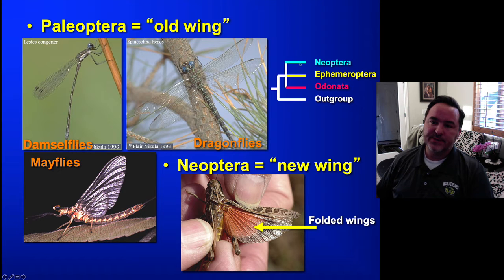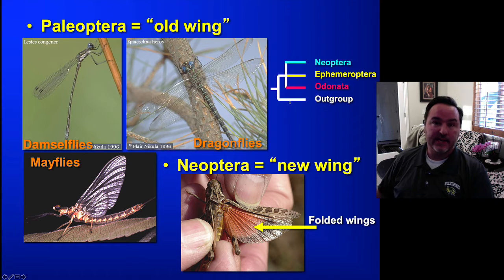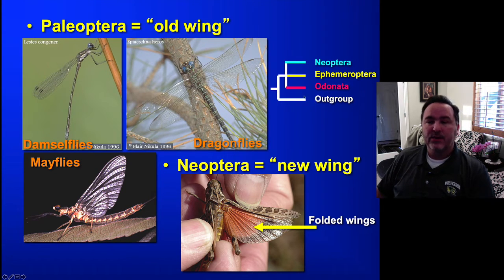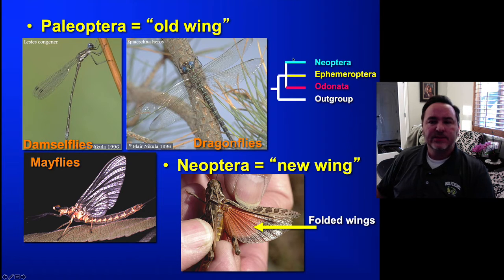So there are these three lineages, and prior to them there are insects that never had wings. The objective of this study is to investigate the relationship of these three lineages.